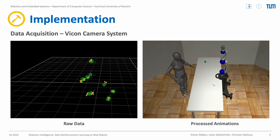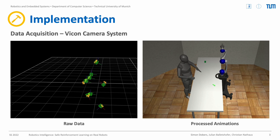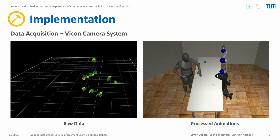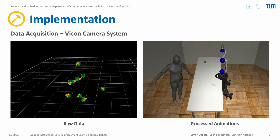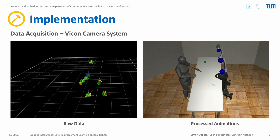We first record certain human motions, which you can see on the left side. This is a typical construction motion which a human would do close to a robot. We then process this data and construct a human mesh which can be loaded into the simulation environment, which is MuJoCo in this case, as you can see on the right. In this way, we are able to train a reinforcement learning agent together with the human animations.